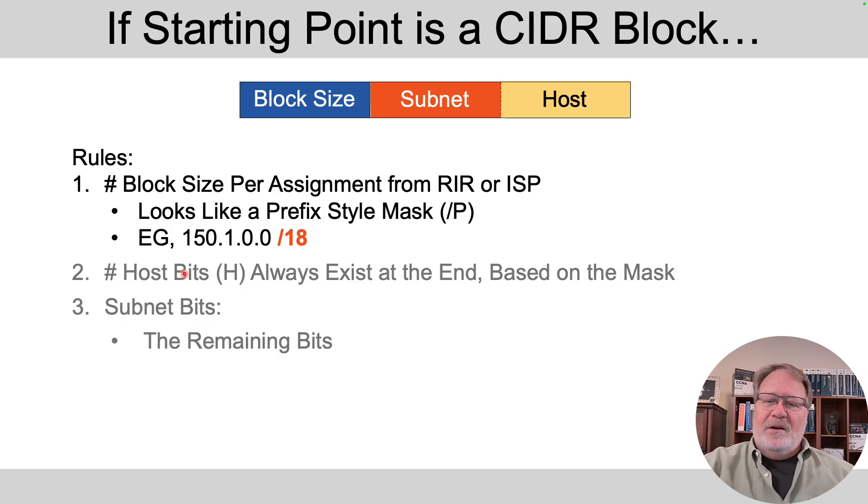So given that, you want to treat this prefix length that's assigned in your CIDR block as N in the previous examples, as the number of network bits. So you'd use 18 instead of 8, 16, or 24 in our previous discussions.